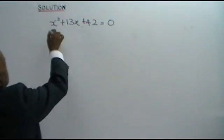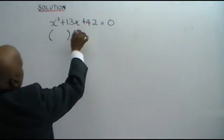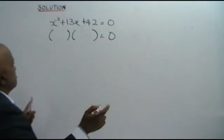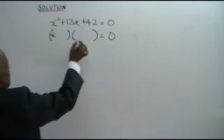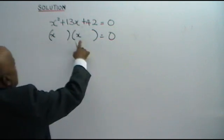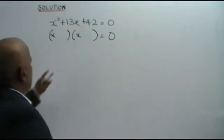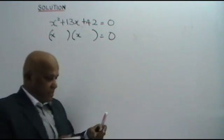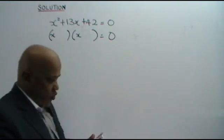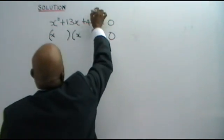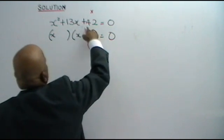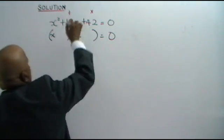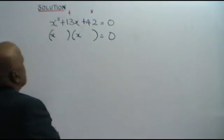What you do is draw two brackets like this, put it equal to 0, and put x here and x here. x times x is x squared. Now you have to find these two numbers. Think of two numbers: when multiplied together you get positive 42, and when added together you get positive 13.